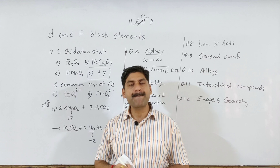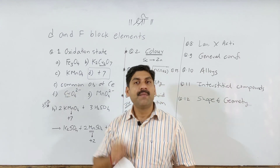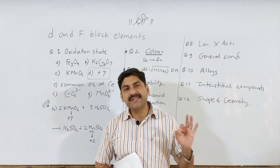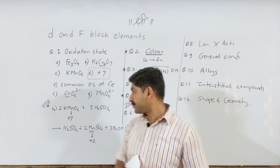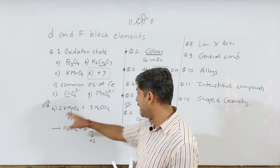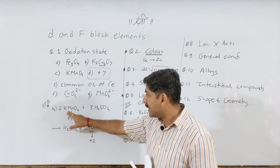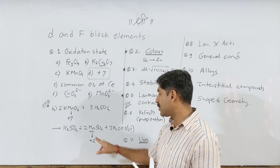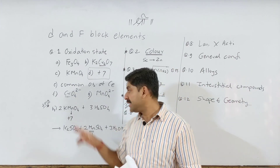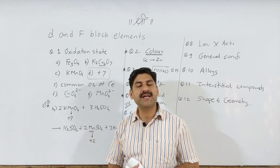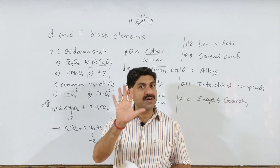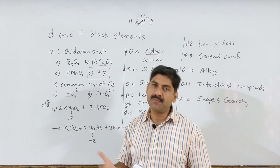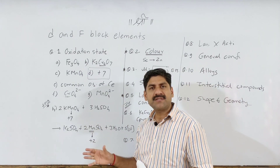Which of the following shows a +7 oxidation state? Manganese shows a +7 oxidation state. The oxidation number of manganese goes from +7 as reactant to +2 as product. The oxidation number decreases, so electrons are gained — 5 electrons are gained (7 − 2 = 5). That is the correct option.